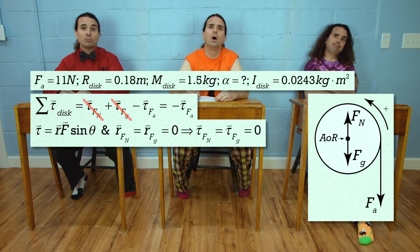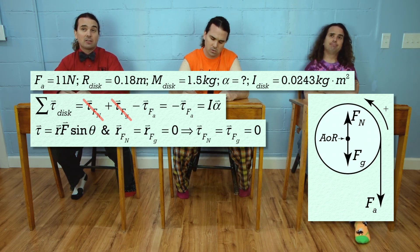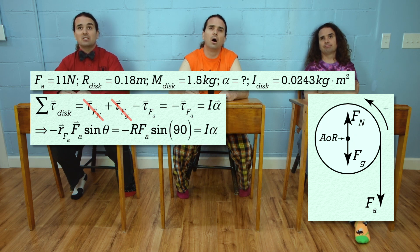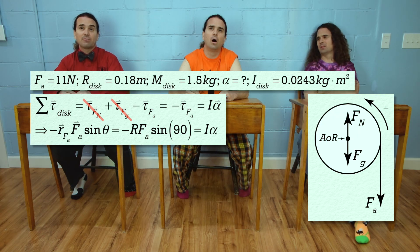Right, and that equals rotational inertia times angular acceleration. Now we can substitute in the radius of the disk for the r value and 90 degrees for the angle between the r vector and the force applied.